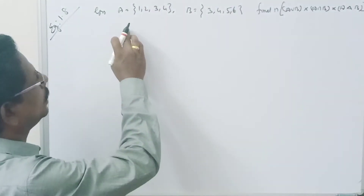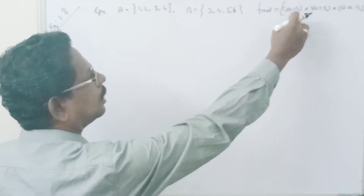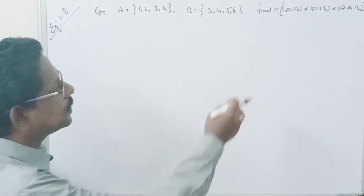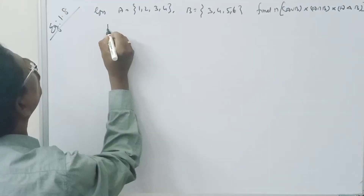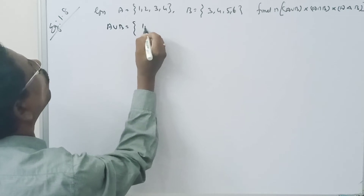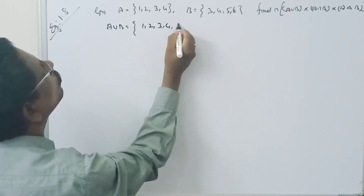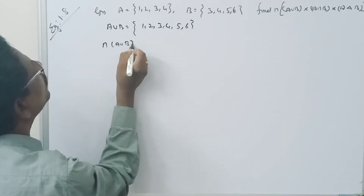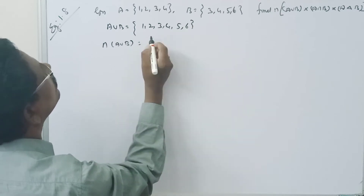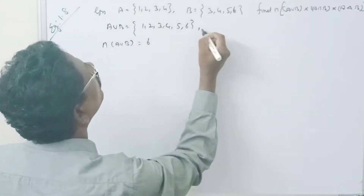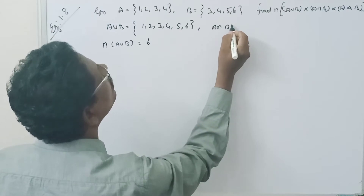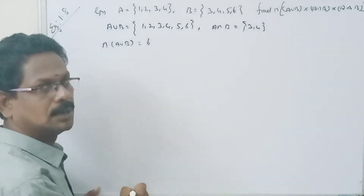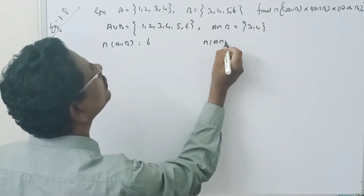Welcome. We need to find the number of A union B, A intersection B, and A symmetric difference B. A union B is equal to {1, 2, 3, 4, 5, 6}, so the number of A union B equals 6. For A intersection B, 3 and 4 are common, therefore the number of A intersection B equals 2.